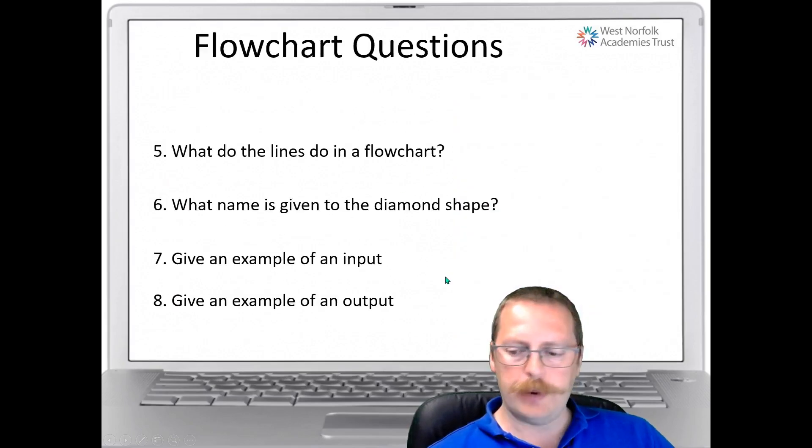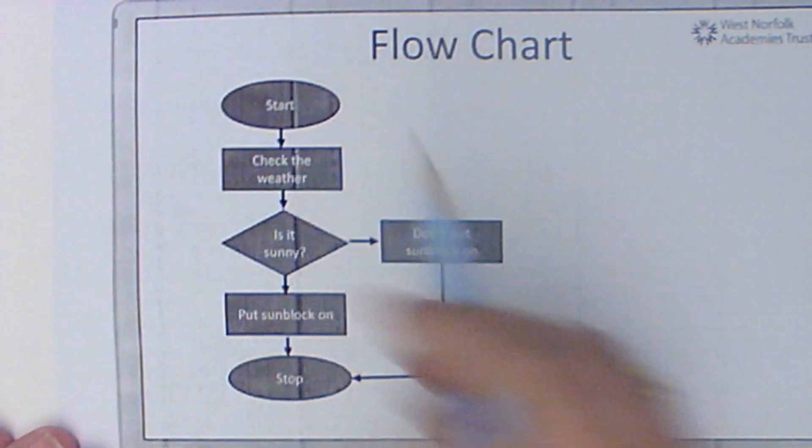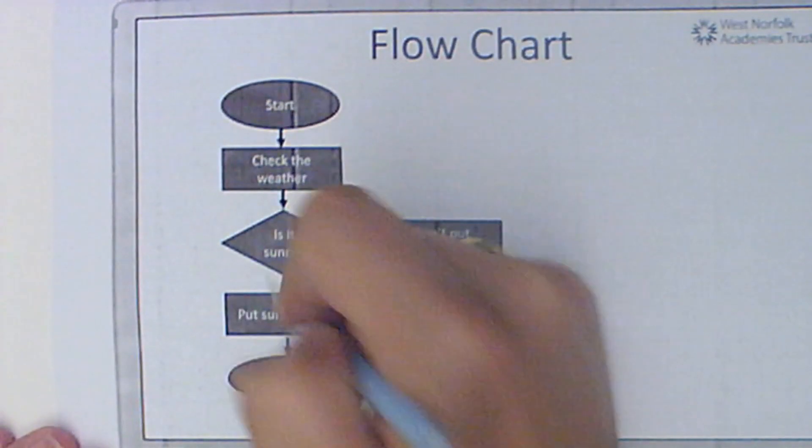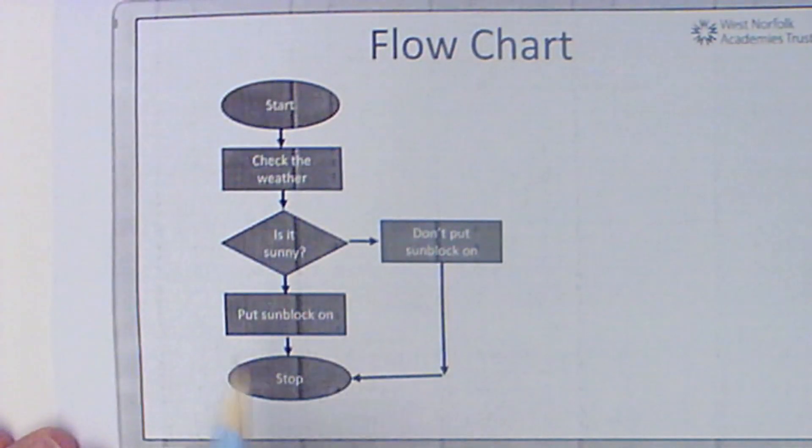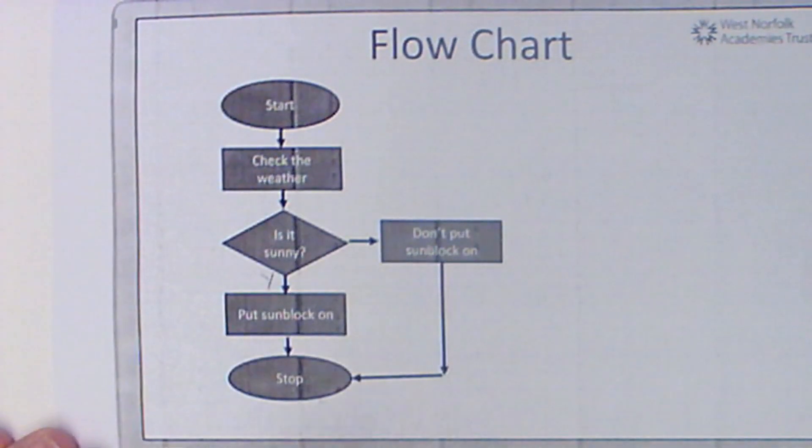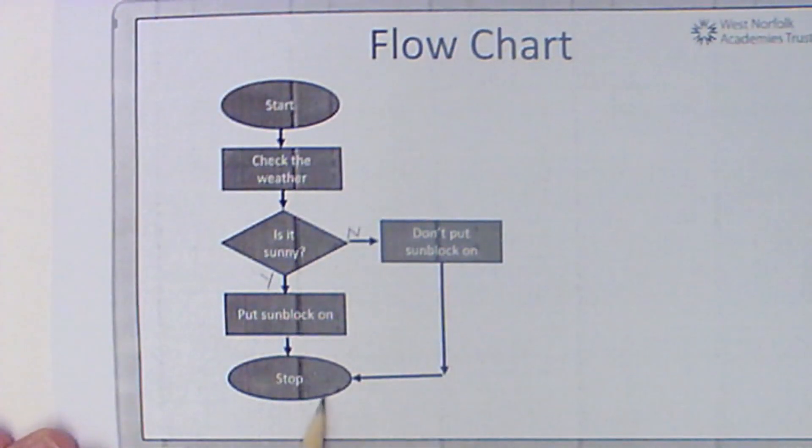Now let's just go back to my information here just to recap that. If we look at the flow diagram, we can see the terminator here for the start and stop. We can see the direction of travel. I did say that I needed to include a yes and a no. So is it sunny? If it is, we can put a yes in here. And if it's not sunny, the answer this way is no. And it goes along here. So we've got all the information you need to be able to answer your questions, hopefully.